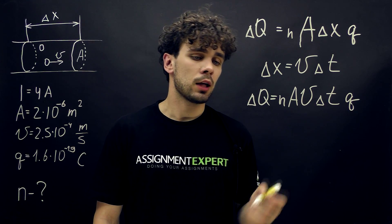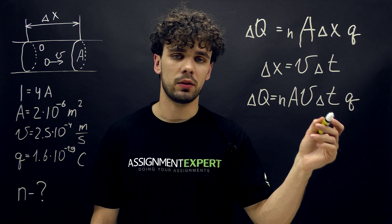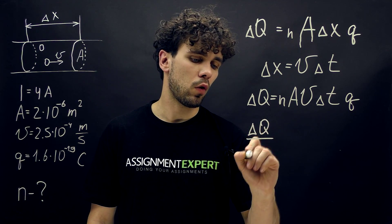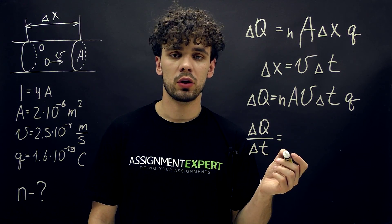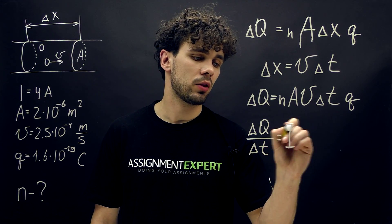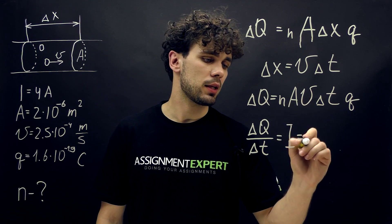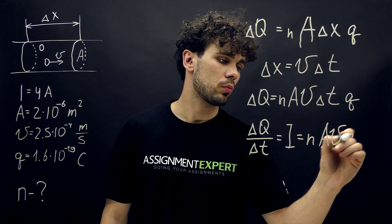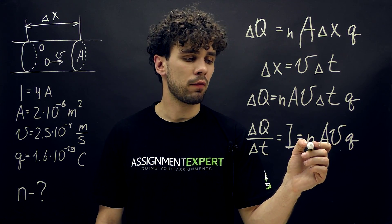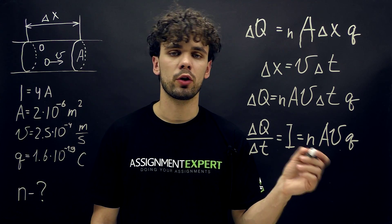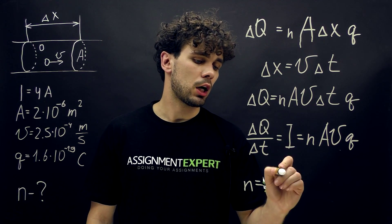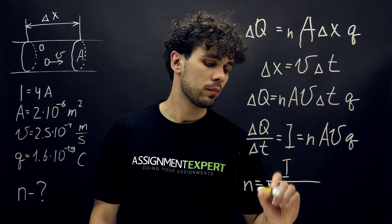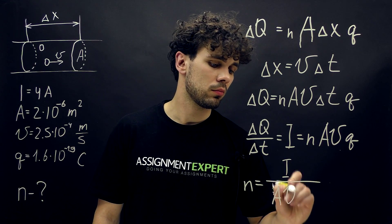Now let's divide both parts of this equation by ΔT. On the left side we get ΔQ over ΔT, which is also equal to I, the current in the wire. And on the right side we get N times A times V times Q. We can now finally derive N, the number of electrons per unit volume: N equals I over A times V times Q.